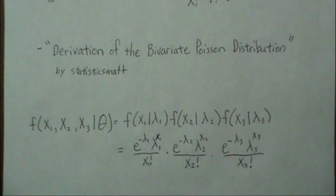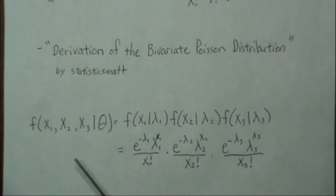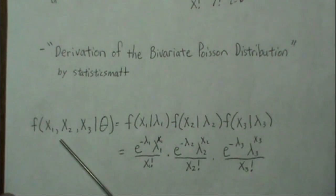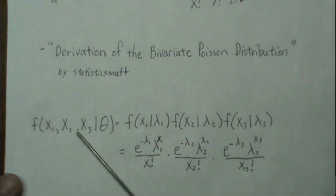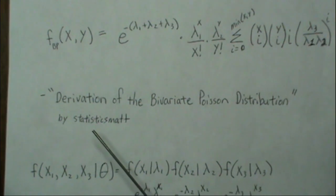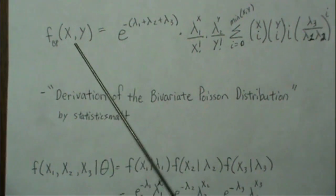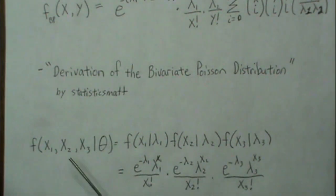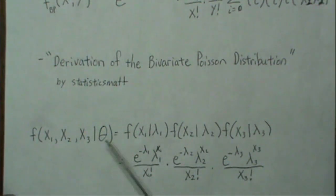A lot of people would be inclined to start with the joint model, which ends up being the likelihood function. But the key in the EM algorithm is to have observable and unobservable variables and then separate them. In the bivariate Poisson model, only X and Y are observable, and they're linear combinations of those three variables, so we can't really use this directly — but we can transform this distribution into something we can use.